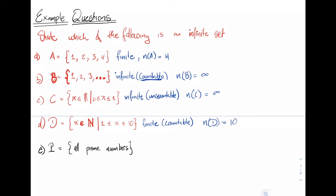Finally, set P is the set of all prime numbers. Is it finite or infinite? This one is infinite and countable. The number of elements in P is equal to infinity.